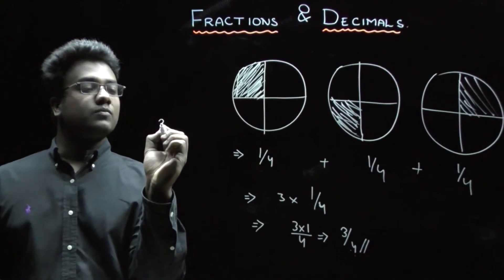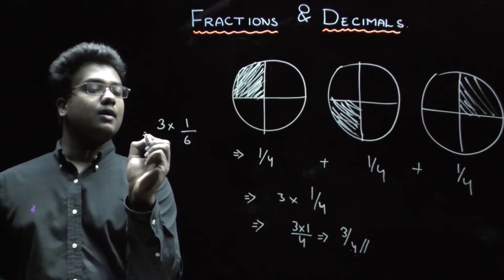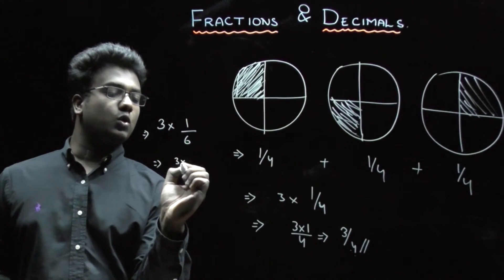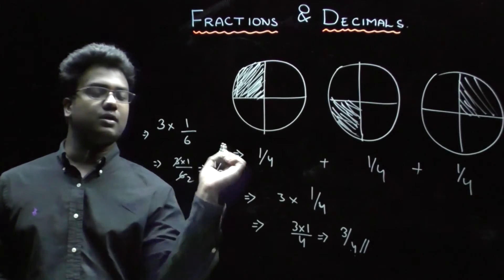Now, what is the value when 3 is multiplied with 1 by 6? It will be 3 into 1 divided by 6, which is 1 by 2. 3 divided by 6.